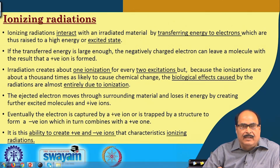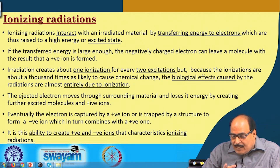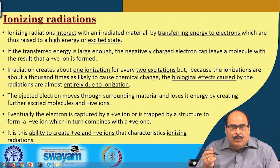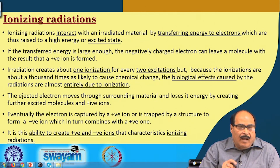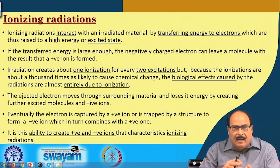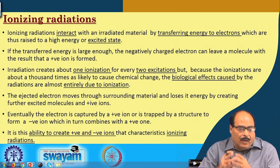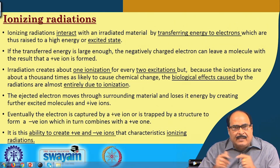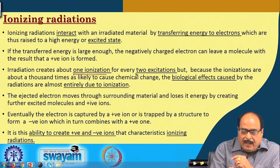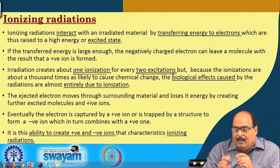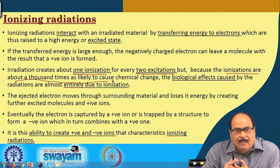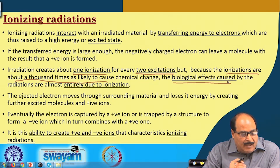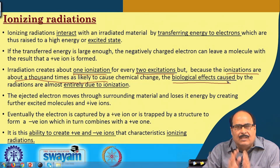These ionizing radiations interact with an irradiated material by transferring energy to electrons. These electrons, after receiving energy, get raised to a high energy or excited state. If the transferred energy is large enough, the negatively charged electron can leave a molecule, giving a positive ion. Irradiation creates about one ionization for every two excitations, but because ionizations are about a thousand times as likely to cause chemical changes, biological effects of radiation are almost entirely due to this ionization effect.